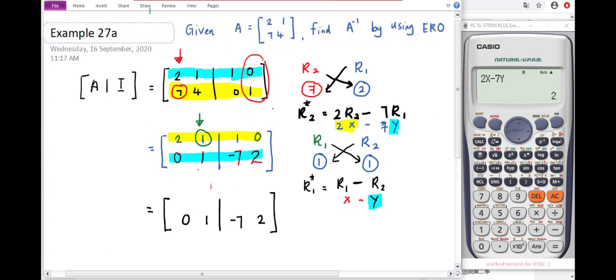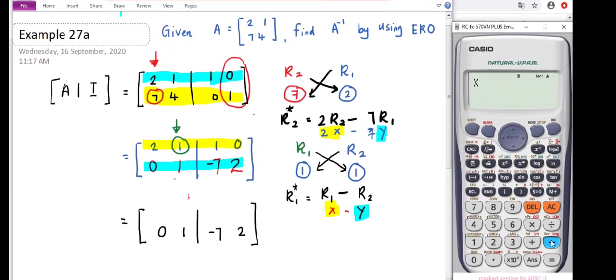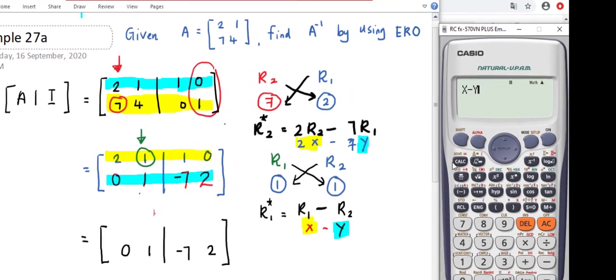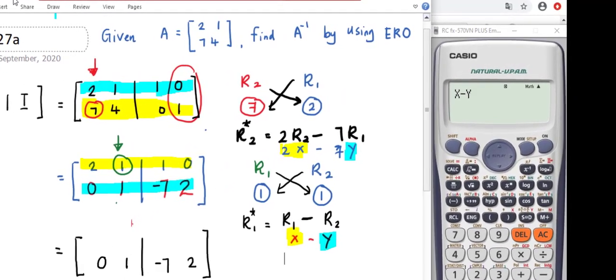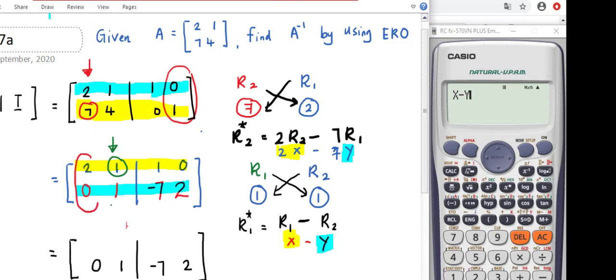Let's proceed to the calculator. Key in x - y and start from the sequence, first column up to the fourth column. First column: x is 2, y is 0, we get 2. Second column: x is 1, y is 1, we get 0. Third column: x is 1, y is -7, we get positive 8. Last column: x is 0, y is 2, we get -2.